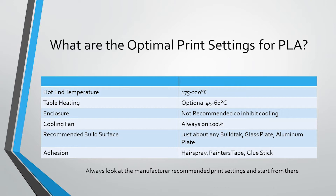Now let's talk about the optimal print settings for PLA. Always look at the manufacturer's recommended print settings and start from there. For the hot end temperature, you're looking at about 175 to 220 degrees Celsius. At 175 the filament comes out barely heated with a poor melt zone between layers, and at 220 you're going to see a lot of blobbing and oozing. Typically, I print anywhere from about 190 to 205 as the optimal range for PLA. For bed heating, it's totally optional and not required for small prints, but for very large prints, 45 to 60 degrees Celsius should help prevent any flexing or lifting.